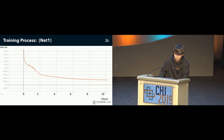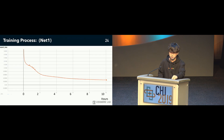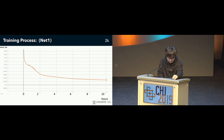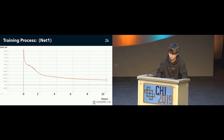This graph shows the learning process on Net1. This is the ground truth — "Alexa, what's the weather like?" As learning progresses, the generated output approaches the ground truth.